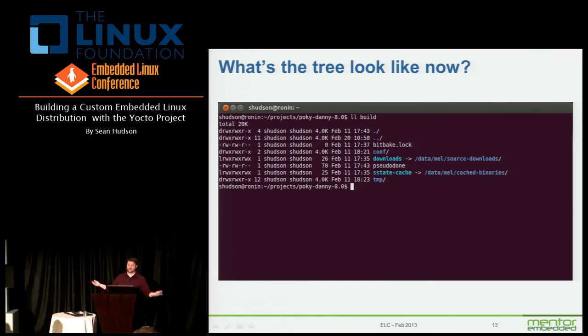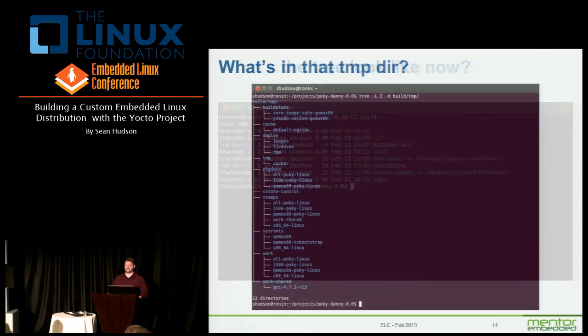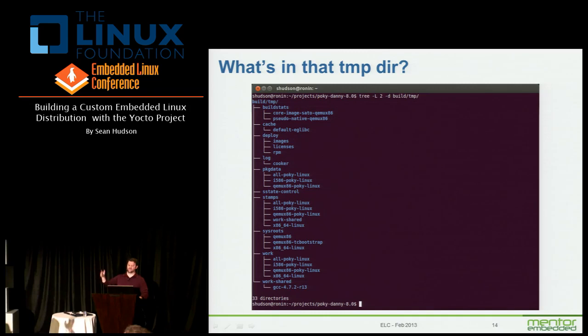And then the tmp directory — this is the build output. That's where everything goes that isn't a source cache or shared state. Let's take a look in there.